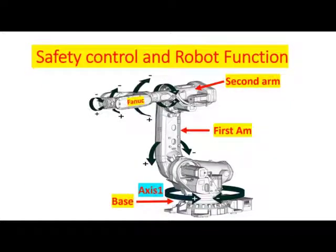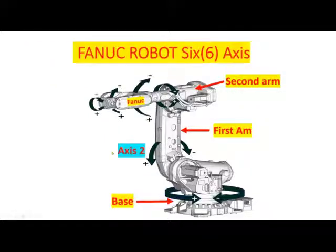This is axis number 1, located at the base of the robot, and it allows the robot to rotate from left to right. It can rotate 180 degrees from the center. Axis number 2 allows the first arm to extend forward and backward.